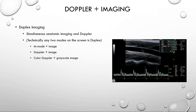With duplex imaging, we get the advantage of simultaneous anatomic imaging plus spectral Doppler. This is known as simultaneous anatomic imaging and Doppler, or more commonly duplex imaging. Technically, any time there are two modes on the screen it's duplex — M-mode plus an image, Doppler plus an image, color plus grayscale. However, most people consider duplex imaging to be an anatomic image in one portion of the screen with spectral Doppler on another portion.